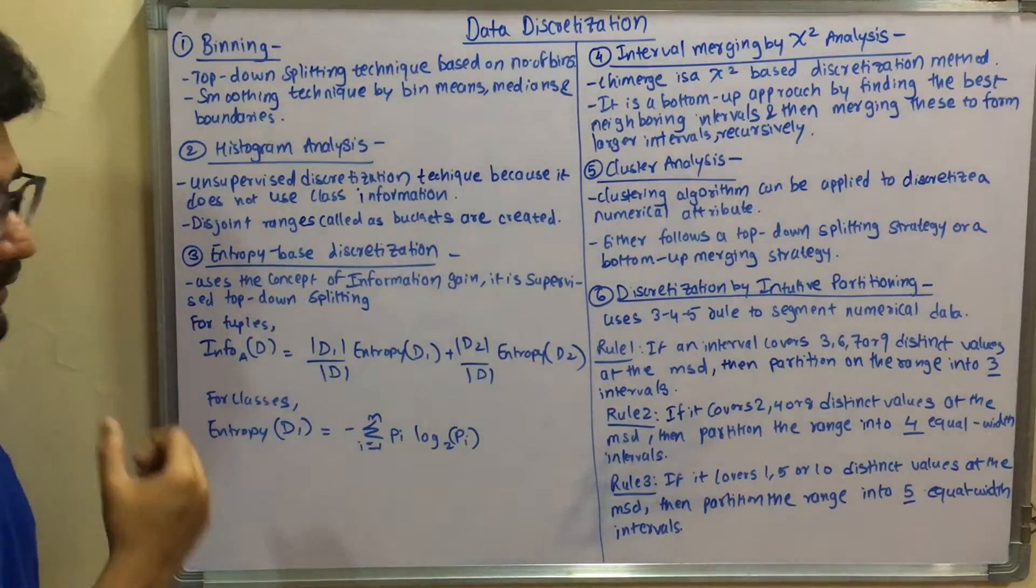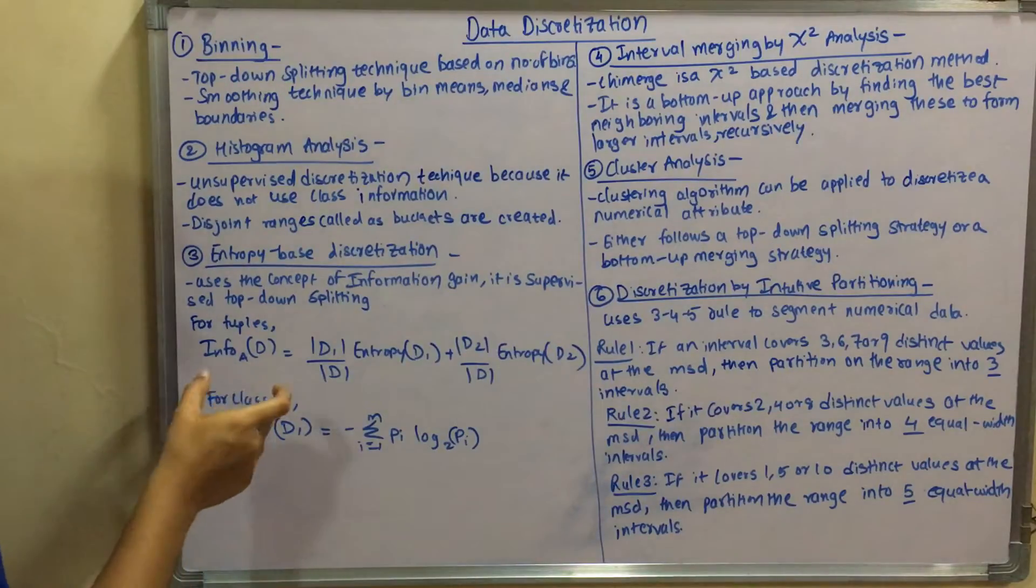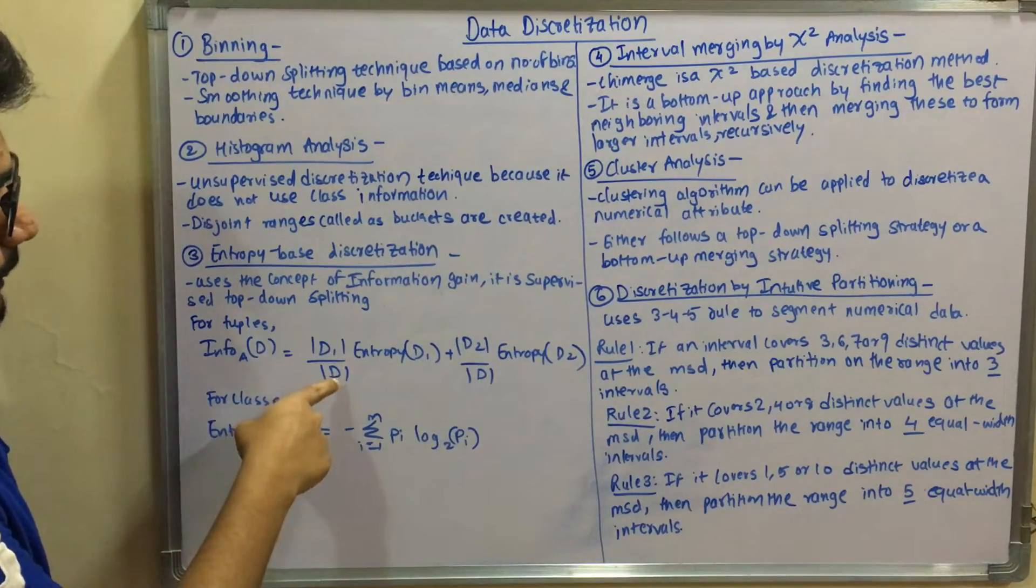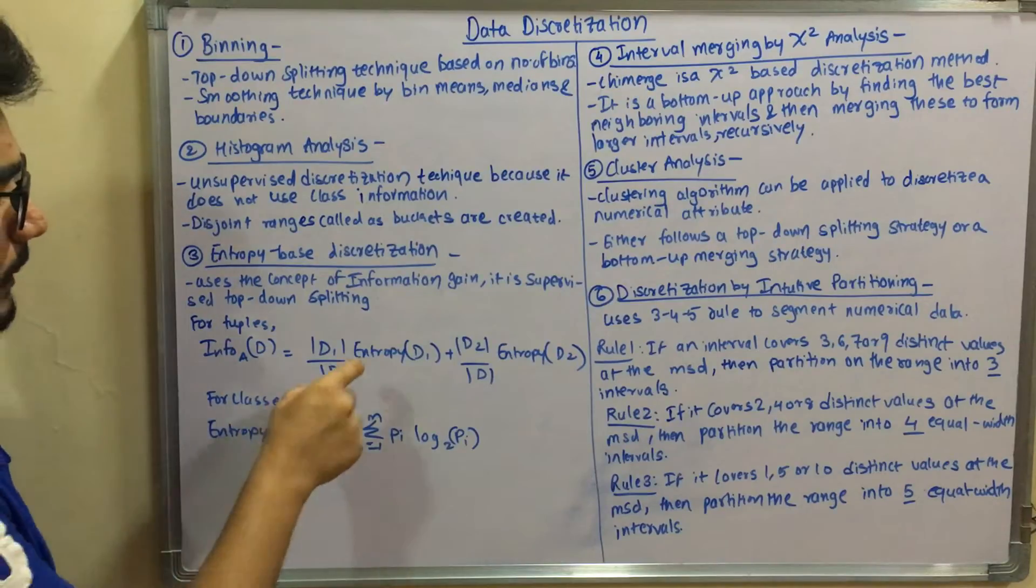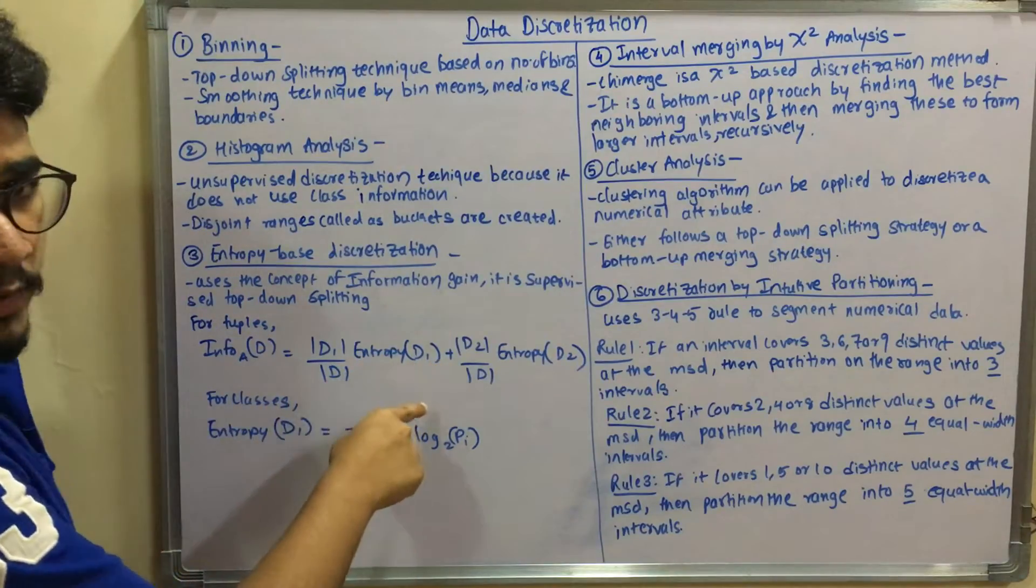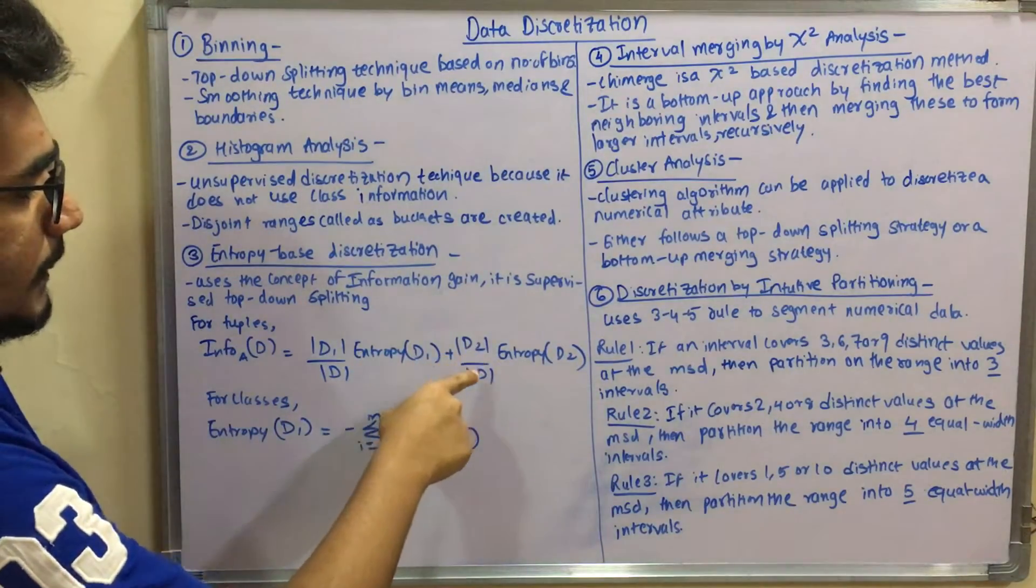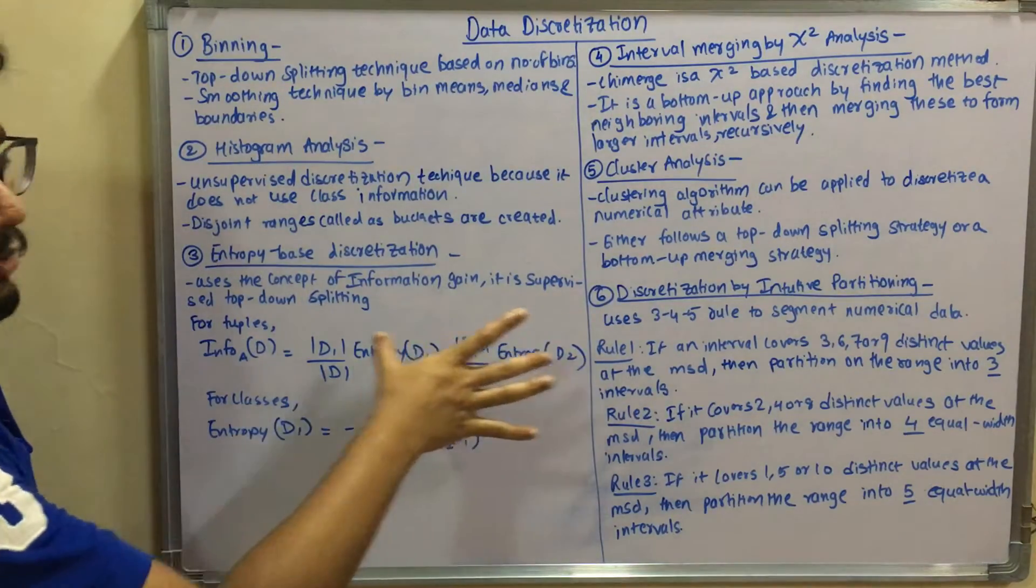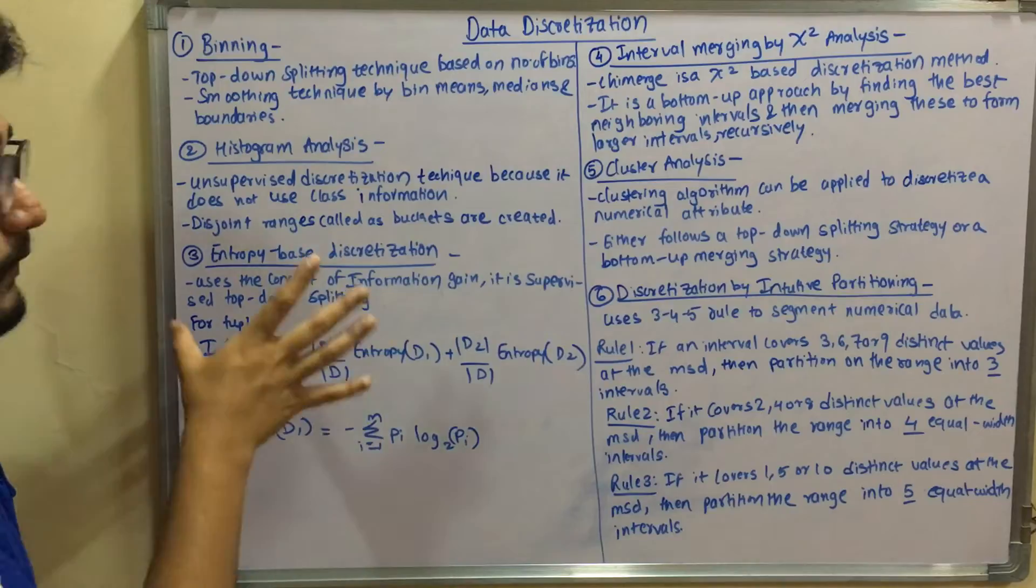For tuples, you have the information A of D. This is how the information gain is represented. You have the entropy D, and you have D1 upon D, that is mod of D1 upon mod D. You have entropy calculated for D1 plus D2 by D, that is mod, and then you have entropy of D2. This technique is used for tuples.